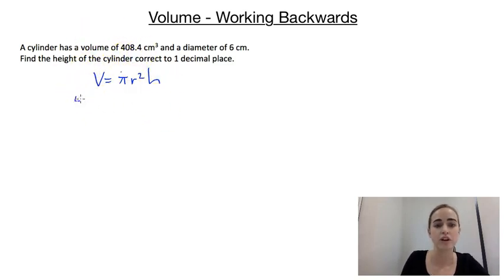We know that the volume is 408.4, and then we've got π. Now we're not told the radius directly, but we are told that the diameter is 6 centimeters, which would mean that the radius would have to be 3. So we can write 3² and then times the height, which is what we're trying to find.